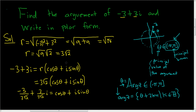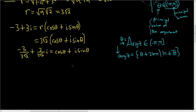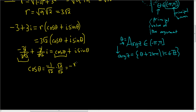Two complex numbers are equal if and only if their real and imaginary parts are equal. Looking at the real parts, the 3s cancel, so cosine of theta must equal negative 1 over the square root of 2. Rationalizing by multiplying by √2 over √2, we get cosine theta equals negative square root of 2 over 2.